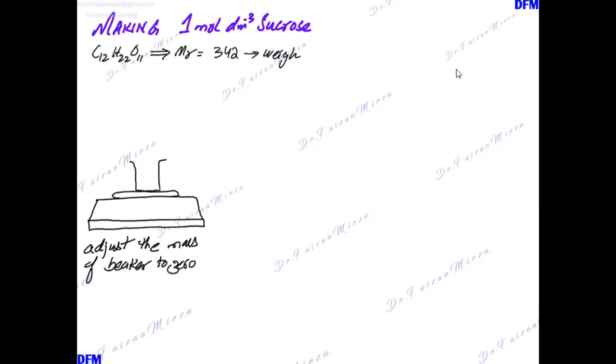Then you add 342 grams of this sucrose solute into the beaker. You will measure exactly 342.00 grams using a spatula. Once this is added, you know this is the solute that you need to add to enough solution to make 1 mole per dm³.